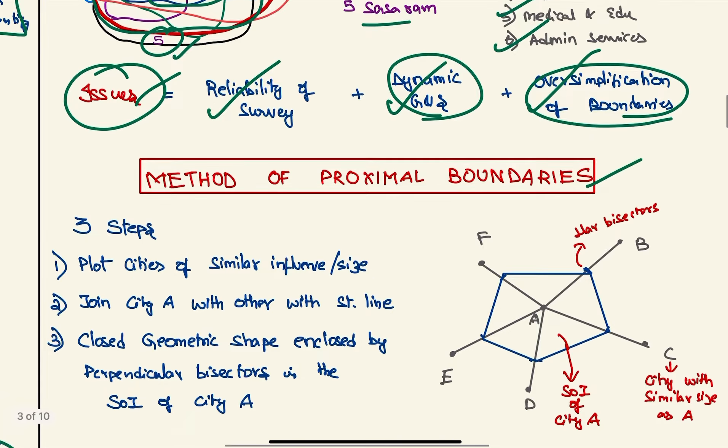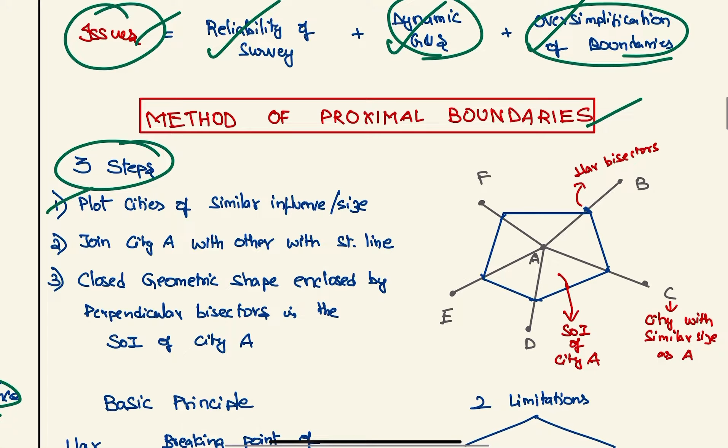Next we have the method of proximal boundaries. Here there are three steps. First, we have to plot all the cities of similar size and hierarchy, so that is the first step—we have A, B, C, D, E, and F. Next, join the main city we want, whose sphere of influence we want to demarcate, with all the other cities with straight lines. Next, draw the perpendicular bisectors of these lines and join all these points, so that this will be the sphere of influence of city A.